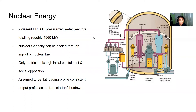Currently, ERCOT has around 5,000 megawatts of nuclear capacity. However, this can be scaled through import of nuclear fuel and additional construction of reactors. The only restrictions are the high initial capital costs and social opposition against nuclear energy due to environmental concerns. For our model, we can assume nuclear energy production to be a flat profile, as it is usually consistent aside from startup, shutdown procedures, or emergencies.